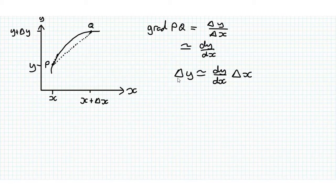So then we can define delta y as being approximately equal to dy by dx times delta x. And we call this the small changes formula. So small change of y is approximately equal to dy by dx delta x.